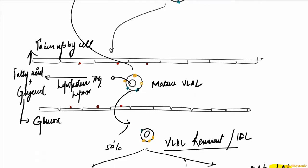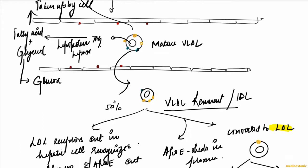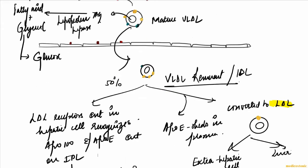Now this mature VLDL enters the capillaries. The central core consists of triacylglycerols. The lipoprotein lipase which are present on the endothelium of the capillaries will act on this triacylglycerol, converting it into fatty acid and glycerol. Fatty acid is taken up by the cell and glycerol ultimately produces glucose.